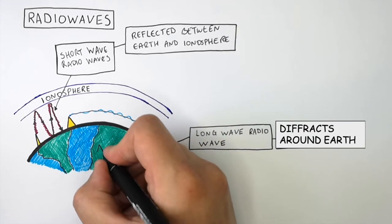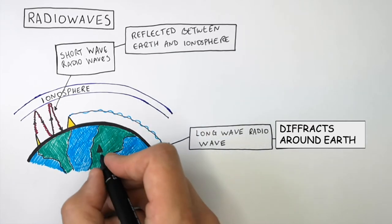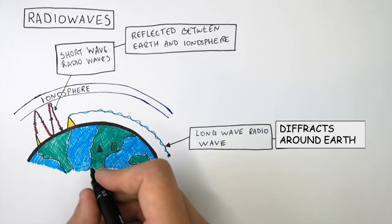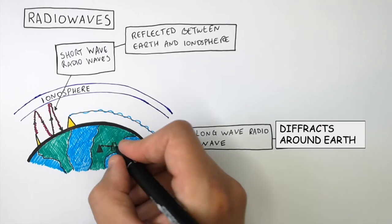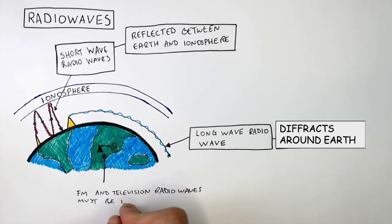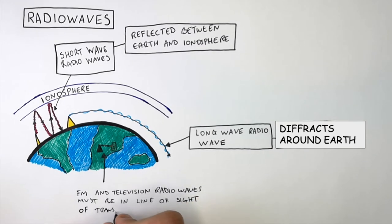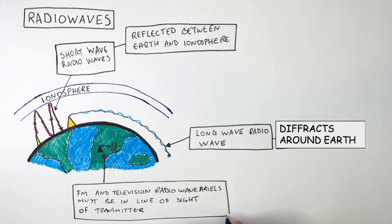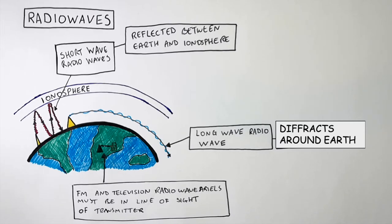FM and television radio waves must be in line of sight of the transmitter. So if you're surrounded by many tall buildings, you're going to struggle to get a television signal if you receive it through radio waves and not through satellite.